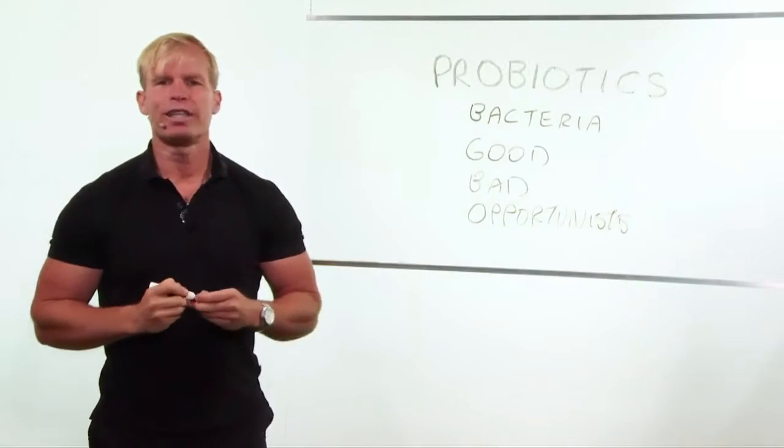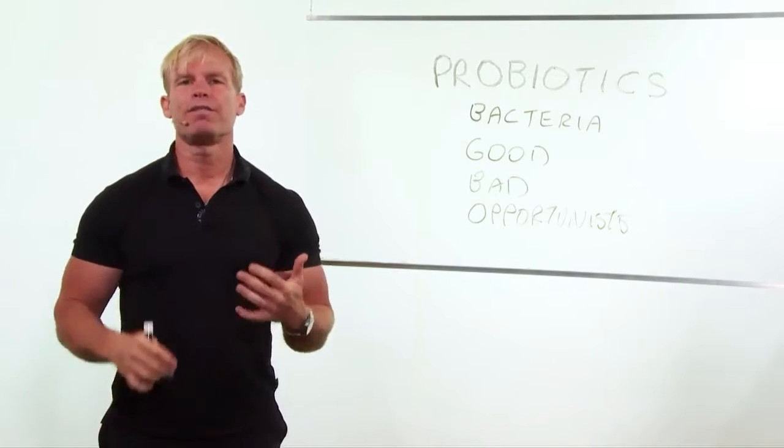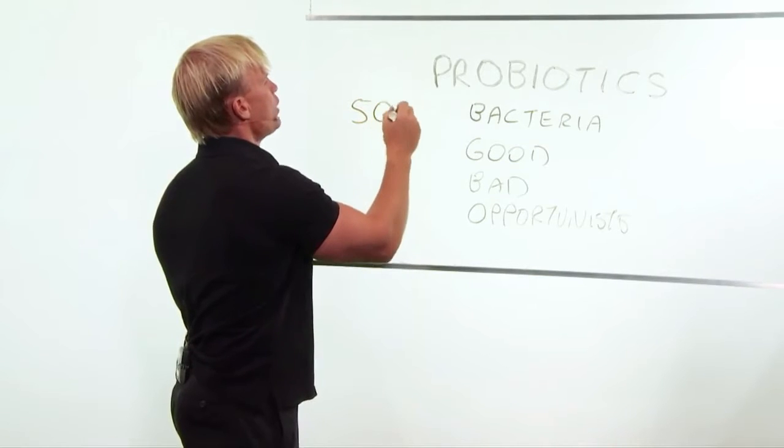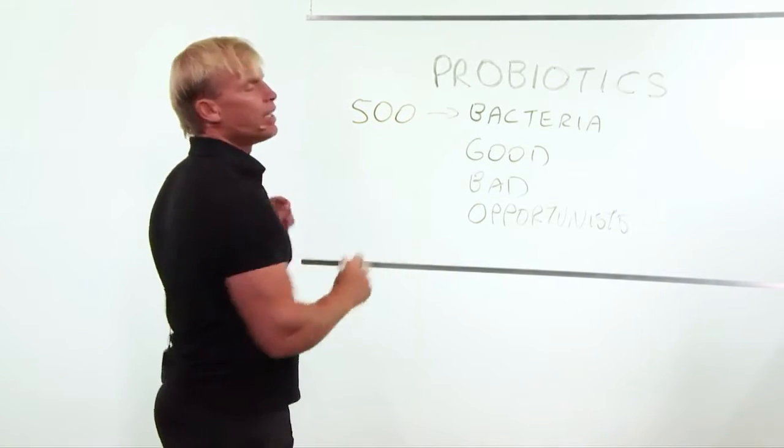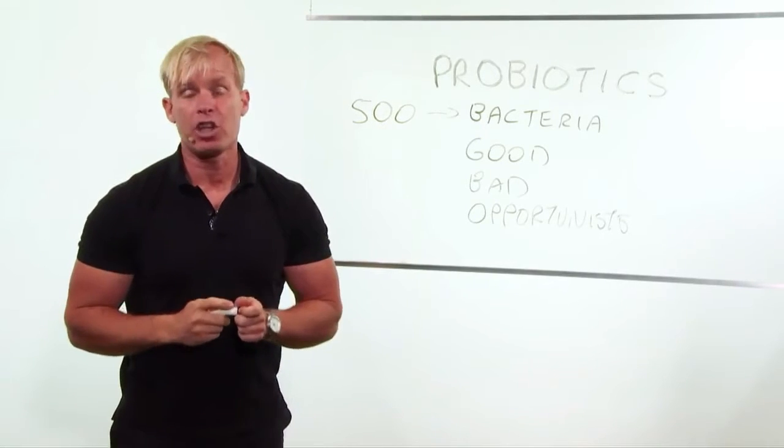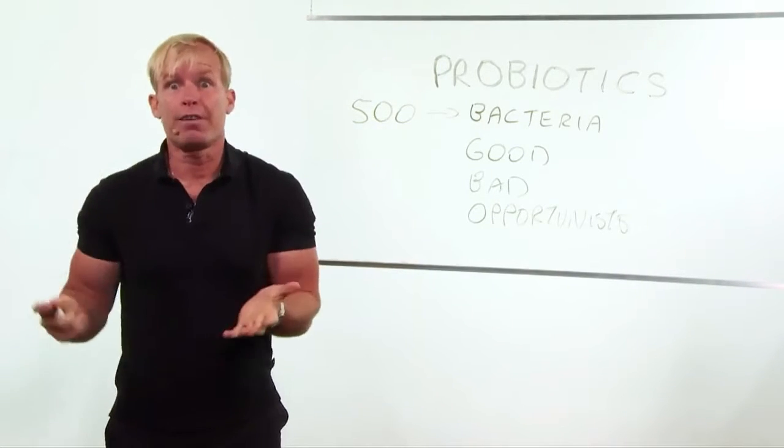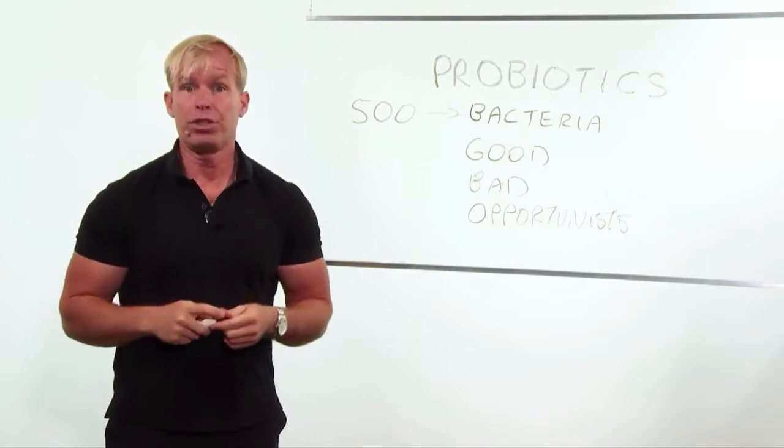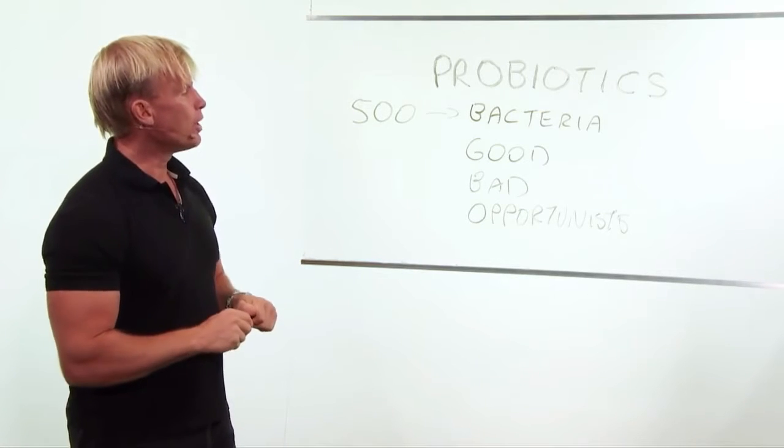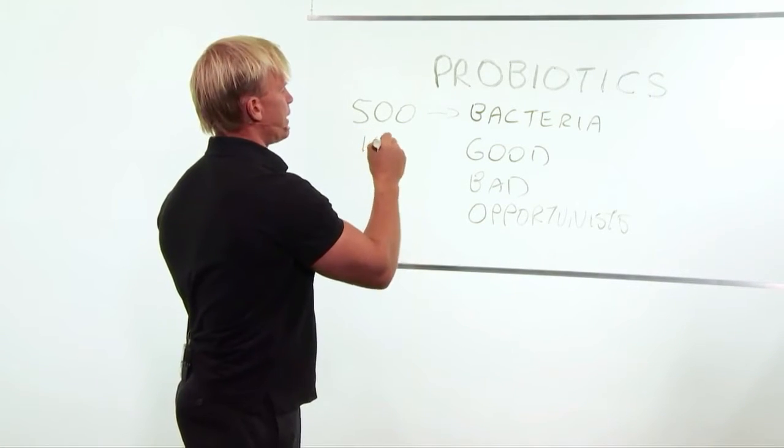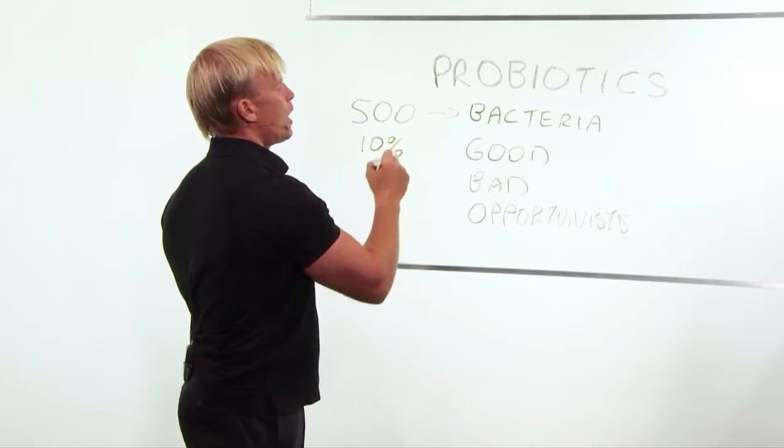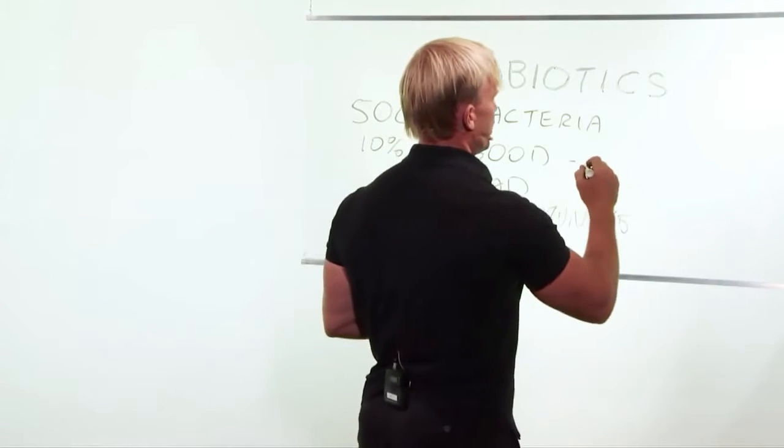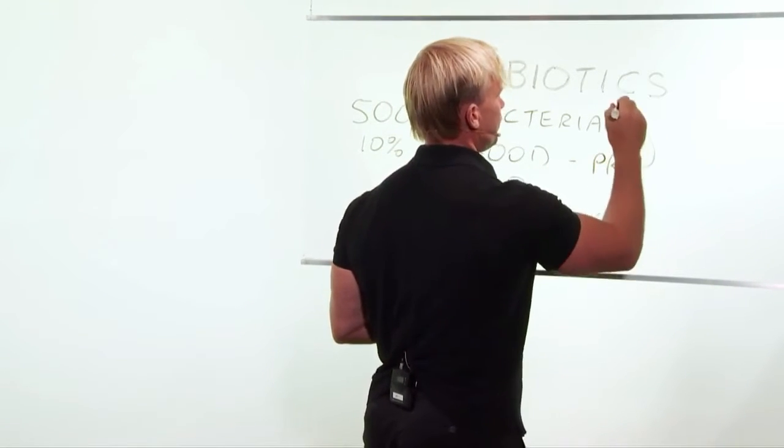Inside your digestive system, there is approximately 500 different strains. Imagine that, 500 different types of bacteria living inside your body. And some of these are essential for you to live, to digest your food. In fact, if you didn't have bacteria inside your body, you'd die. It's that simple.